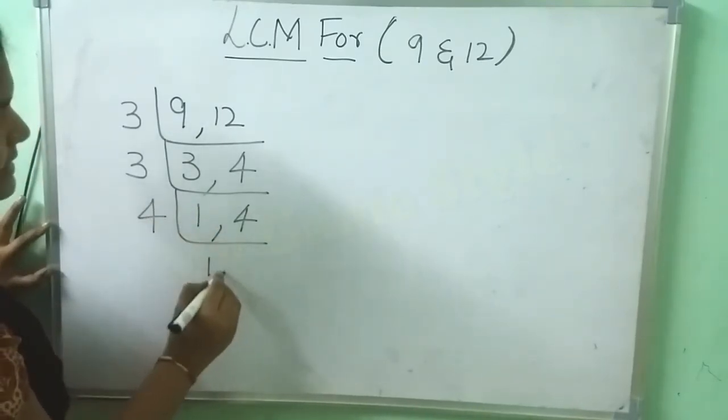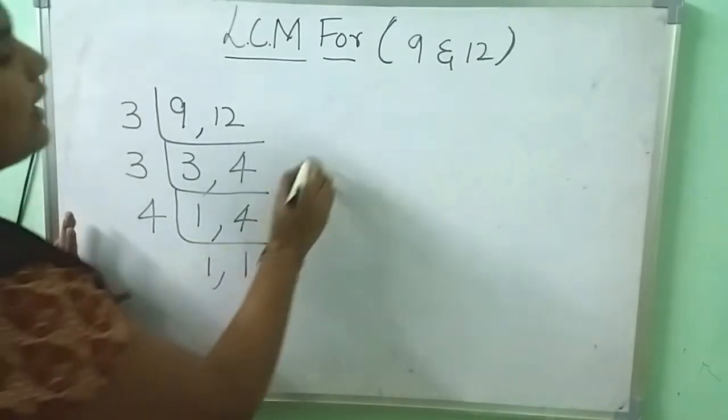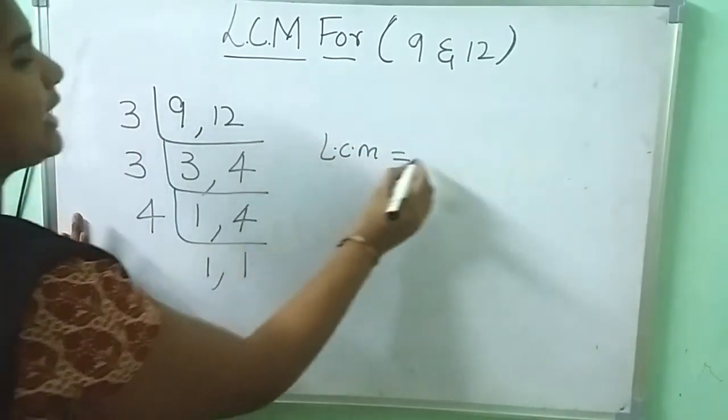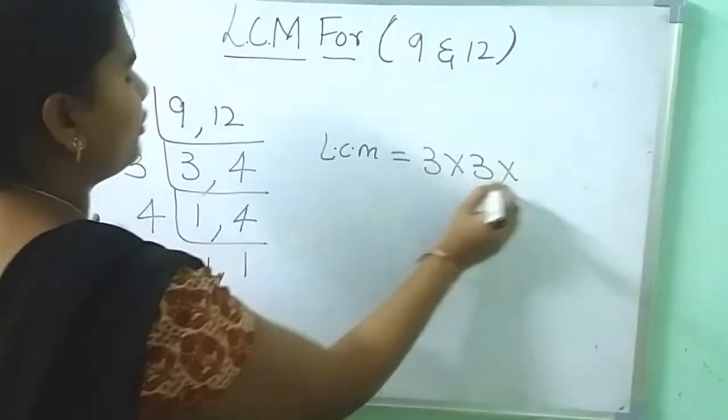This 1 has it is. 4, 1's are 4. Here LCM is equals to 3 into 3 into 4.